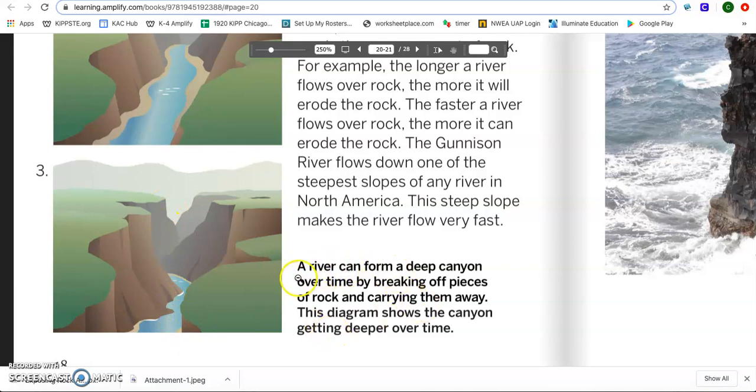Reading the caption, a river can form a deep canyon over time by breaking off pieces of rock and carrying them away. I am actually going to write this down because this sounds like an answer to my question in the classwork. This diagram shows the canyon getting deeper over time. And that's a really cool diagram too. And it definitely shows the Gunnison River chipping away at that rock, causing the Black Canyon to get deeper and deeper. Now let's go ahead and get into answering our question in our classwork.